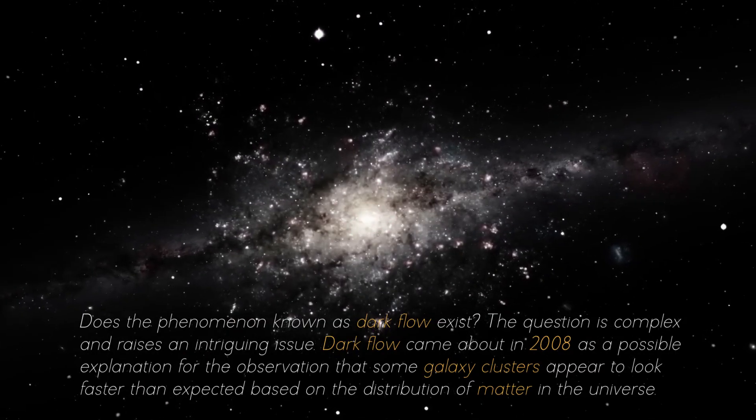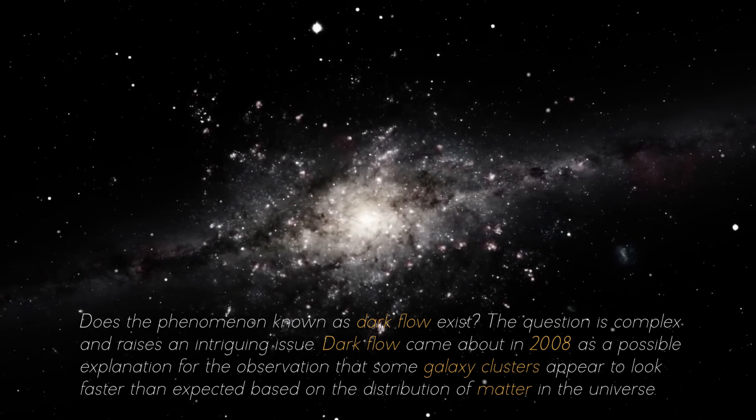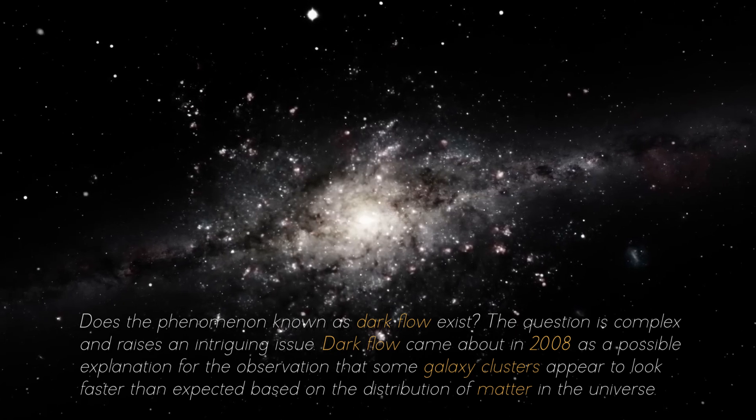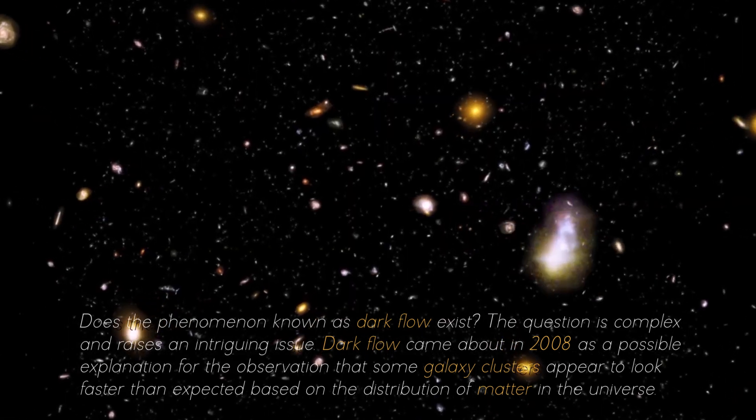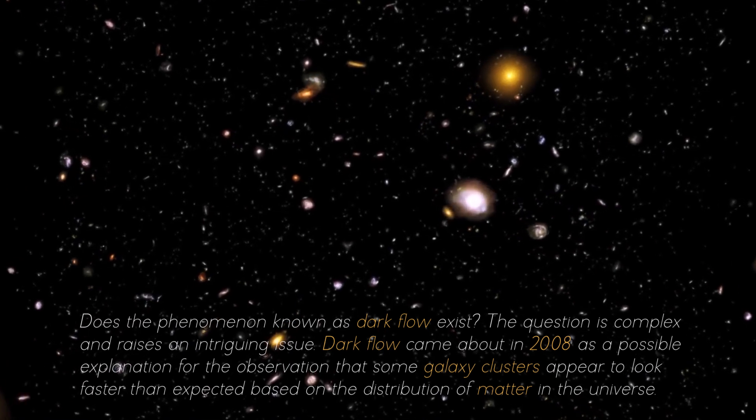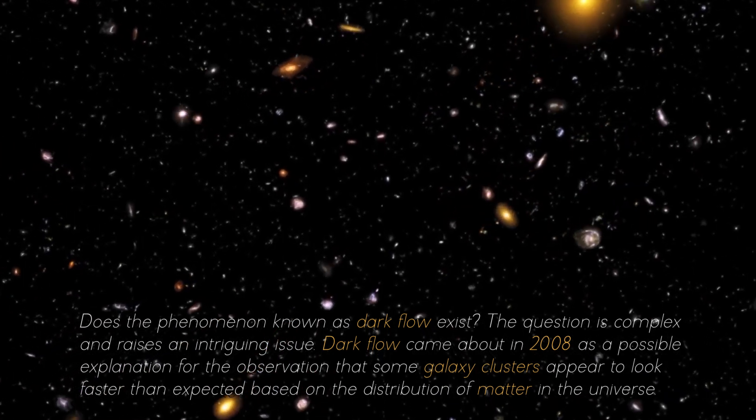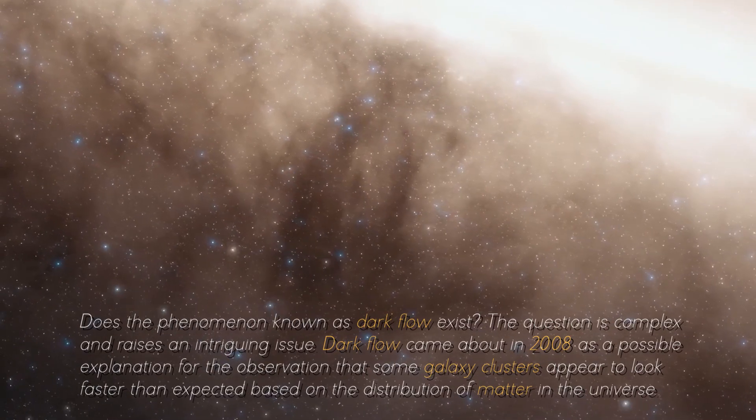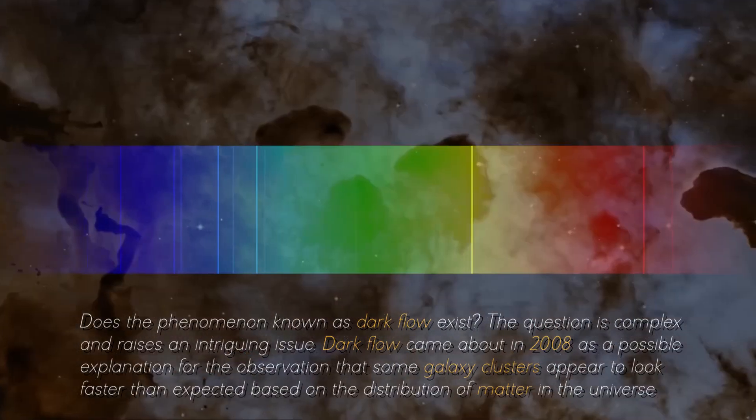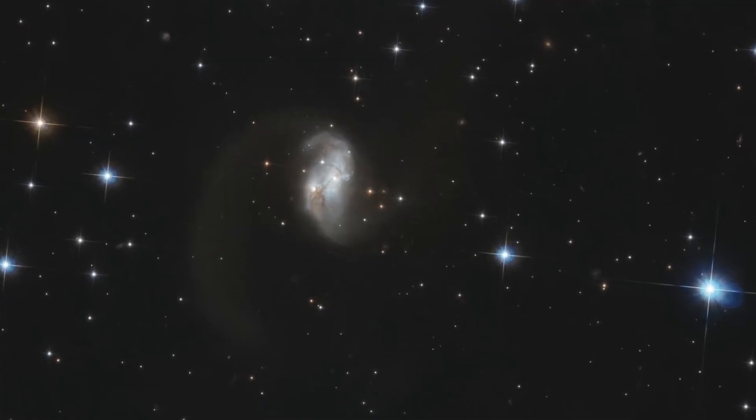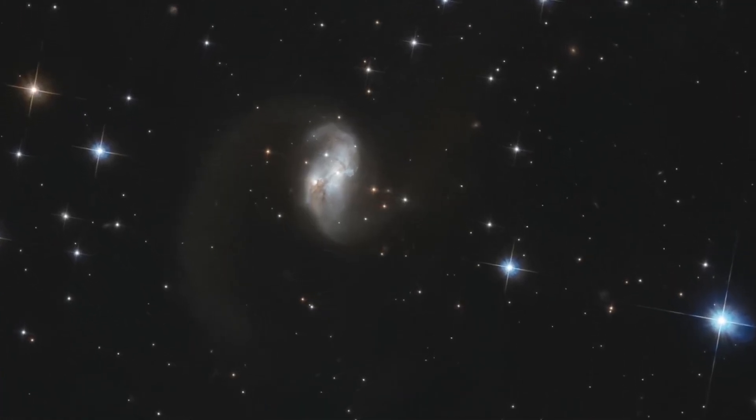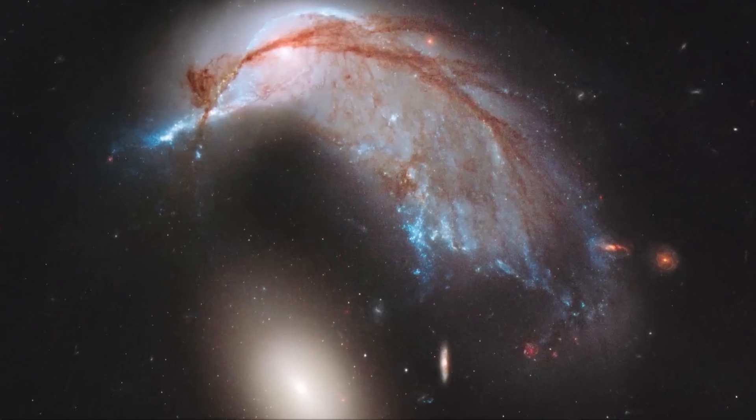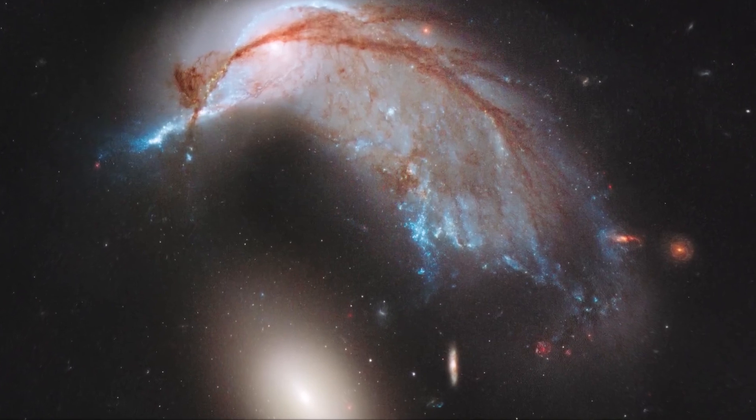Does the phenomenon known as dark flow exist? The question is complex and raises an intriguing issue. Dark flow came about in 2008 as a possible explanation for the observation that some galaxy clusters appear to move faster than expected based on the distribution of matter in the universe. The concept of dark flow suggests that these galaxy clusters may be influenced by some form of dark matter or dark energy that pulls them in a specific direction.